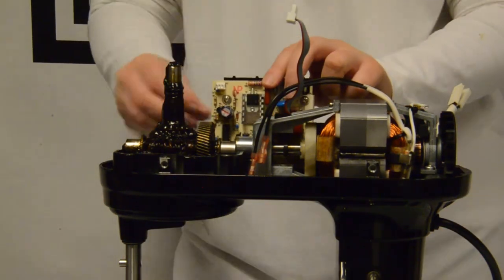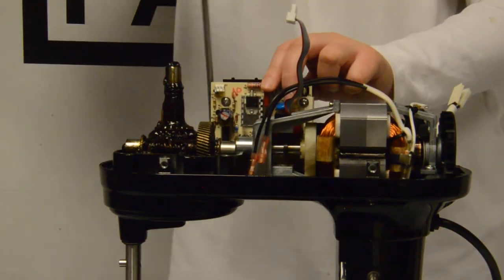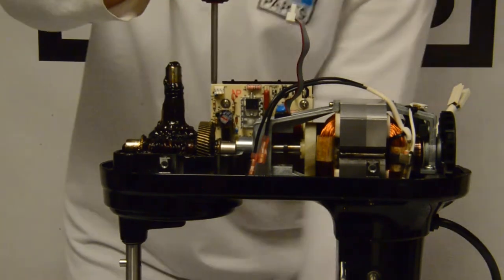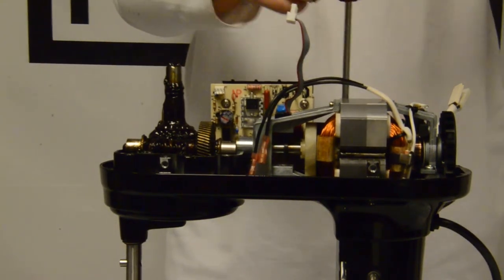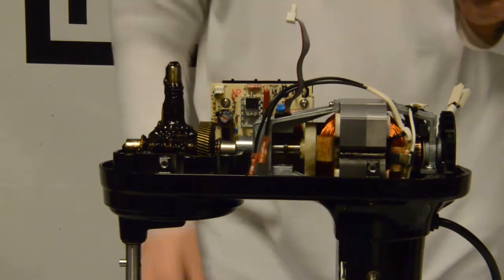Take the new control board and place it in the mixer and screw down with two screws. Then attach the hall sensor connector back to it.